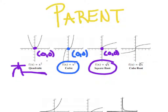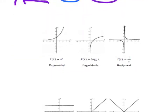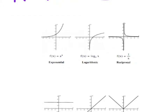The cubed root of x — worst case scenario, plug some points in to figure out what the shape looks like. You can take the cube root of a negative, so you will see the graph on both sides. Probably the three heavy hitters are exponential, log, and reciprocal graphs.